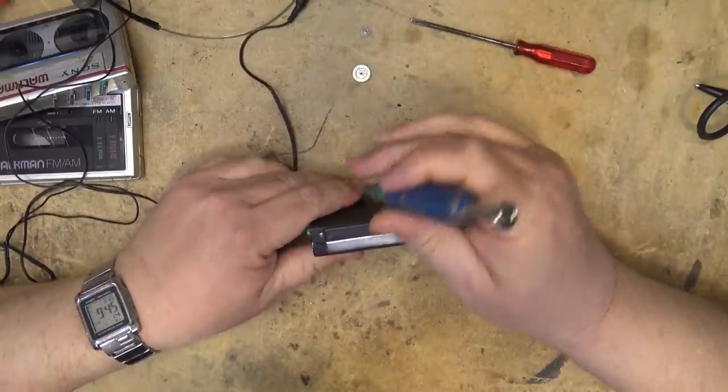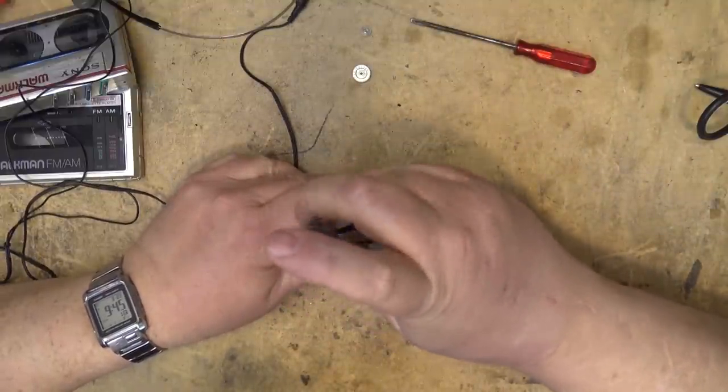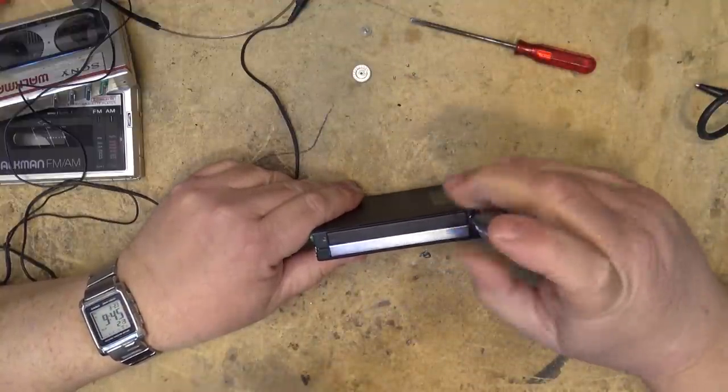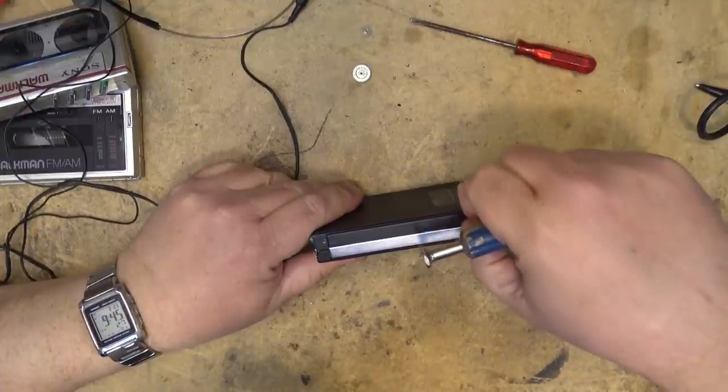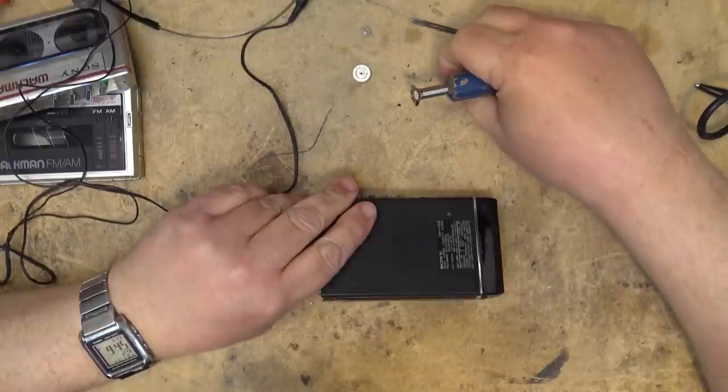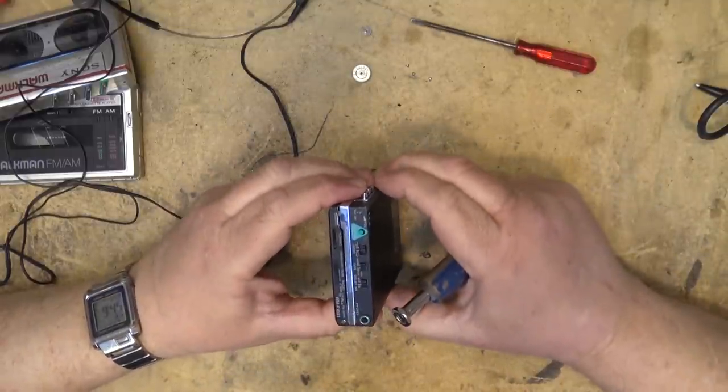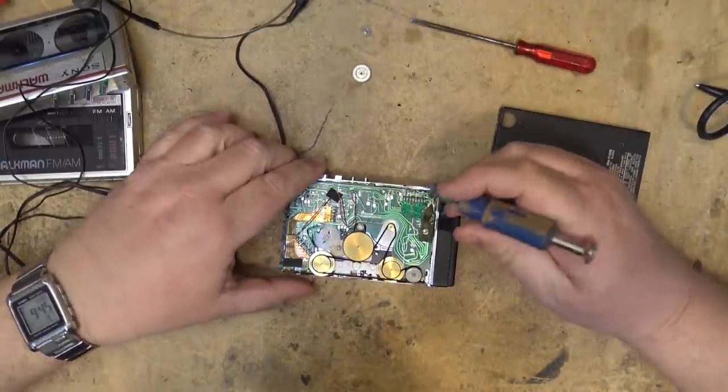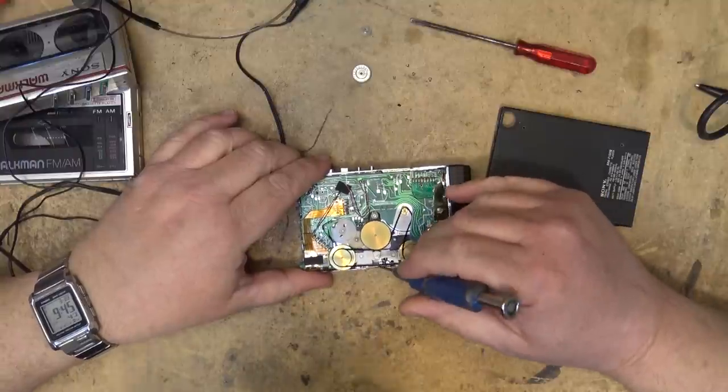And I'm sure that the little belt is probably, there's nothing left of it. They were pretty common to fail on these. And I bet all three of them, the belt is toast. What would be interesting is if I could still find a belt for one of these things today. Yeah, see, the belt is turned to mush. Here it is. The belt is completely toast, but you see.